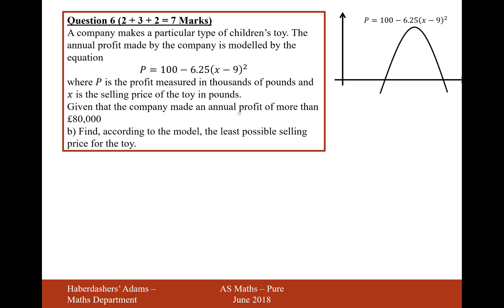Given that the company made an annual profit of more than £80,000, so therefore in that question, P equals 80, because 80 is measured in thousands of pounds, according to the model, find the least possible selling price of the toy. So let's put P equals 80 into the formula. So 80 equals 100 minus 6.25 times x minus 9 squared. So let's just rearrange a little bit.